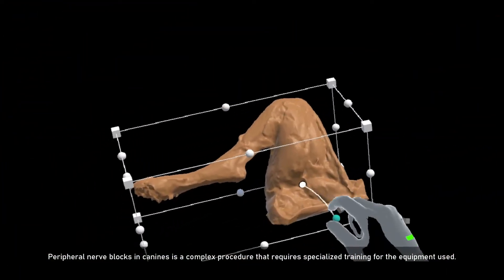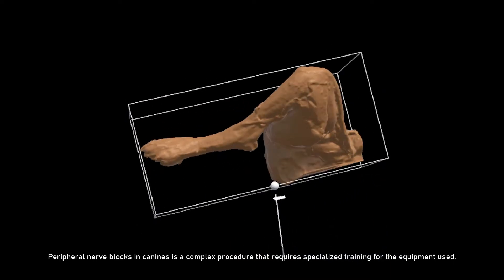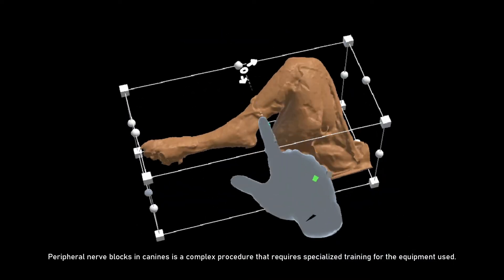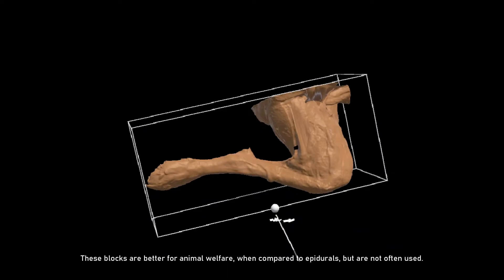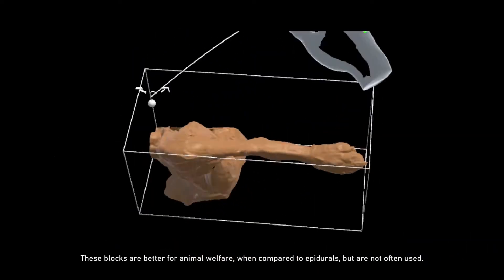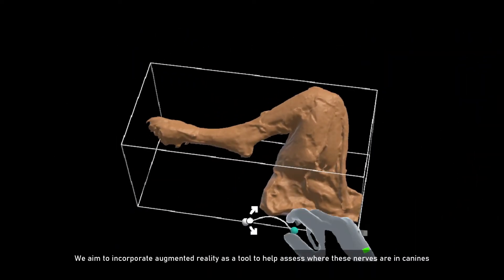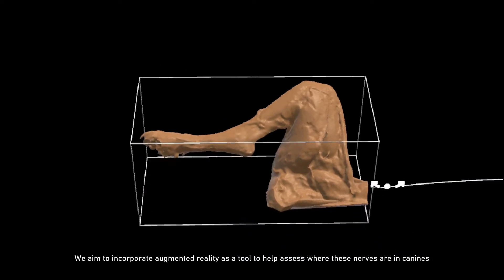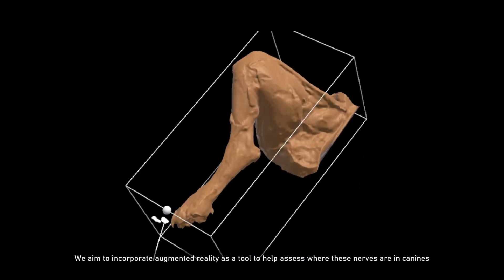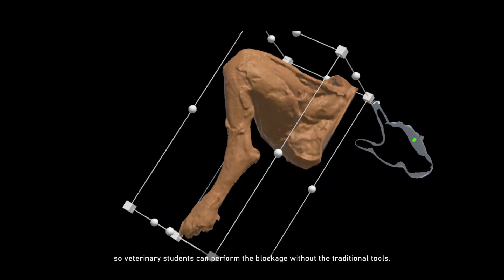Peripheral nerve blocks in canines is a complex procedure that requires specialized training for the equipment used. These blocks are better for animal welfare when compared to epidurals but are not often used. We aim to incorporate augmented reality as a tool to help assess where these nerves are in canines, so veterinary students can perform the blockage without the traditional tools.